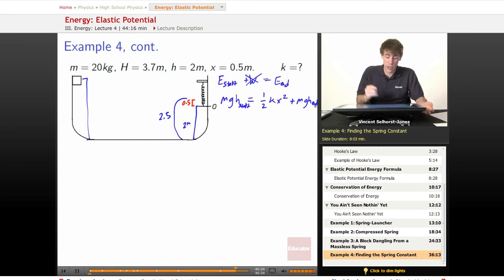So at this point, we're ready to do it. So we've got mgh start minus mgh end equals one-half kx squared.